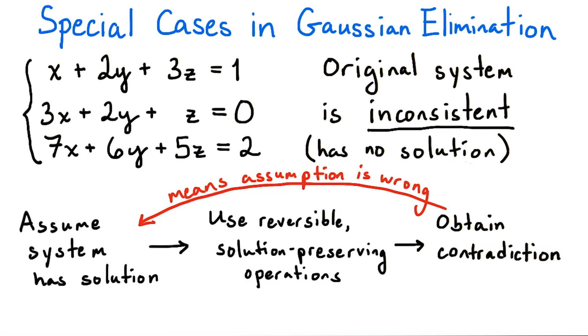In fact, if we ever run into the case that the left hand side of an equation is 0 and the right hand side is not 0, we can immediately stop and say that the system has no solutions. This is a nice criterion for finding systems with no solutions, but what about systems with more than one solution?